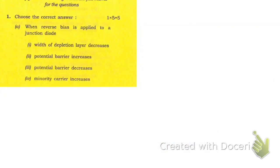Here is the first question: when reverse bias is applied to a junction diode, then what happens? Let me read the options one by one. Width of depletion layer decreases - that is false. Potential barrier increases - that is correct. So the answer is option number two.